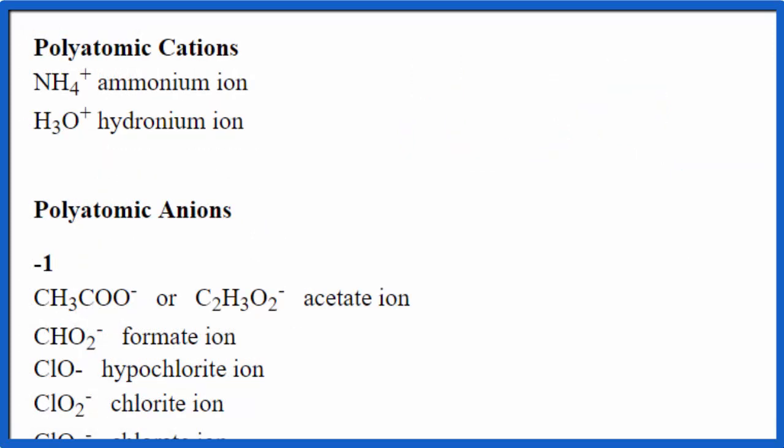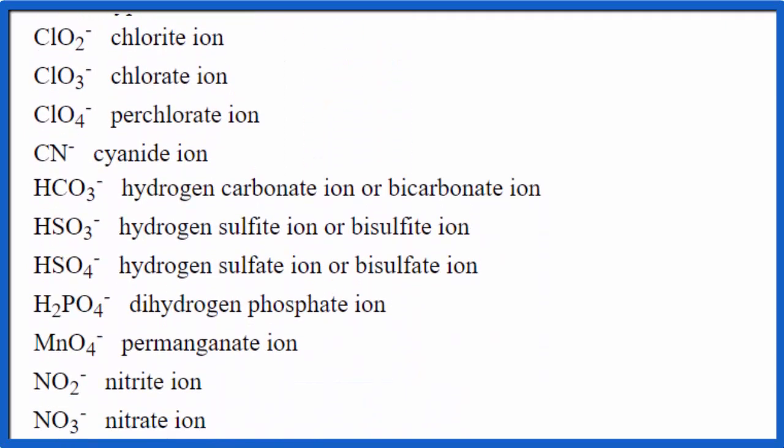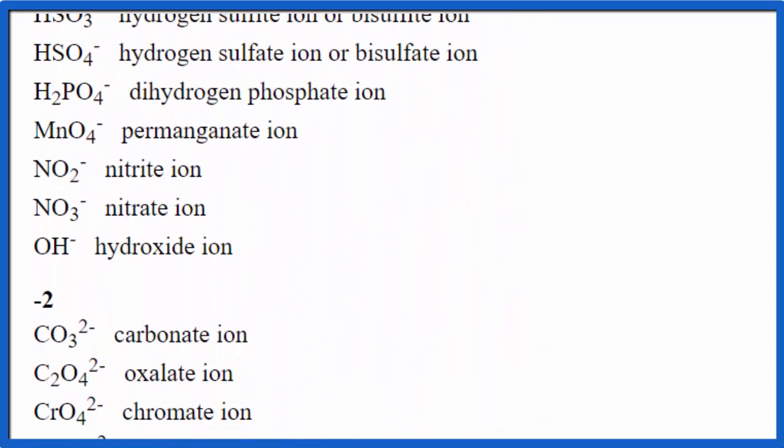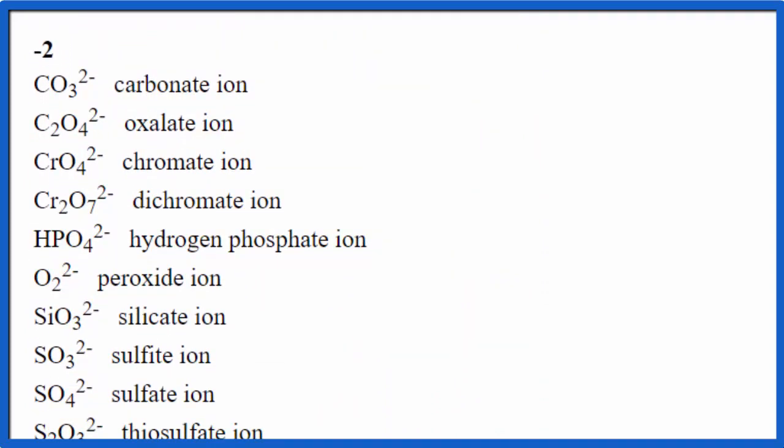On our common ion table, we're going to look for SO4, two minus. So we go down the table here, keep going down, and here's the two minus ions. And there we are, SO4, two minus. It's called the sulfate ion. So now we know we have the sulfate ion.